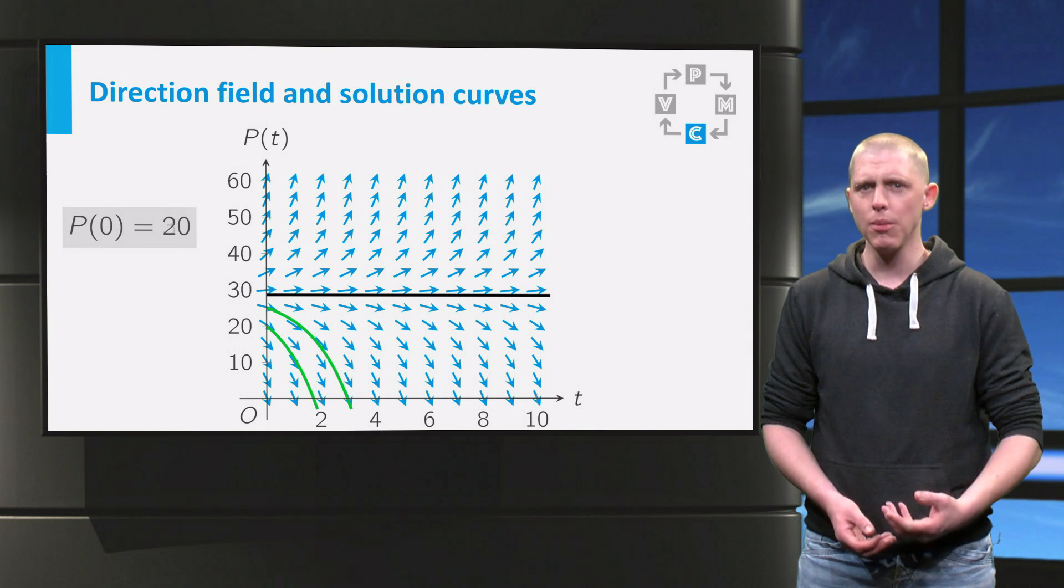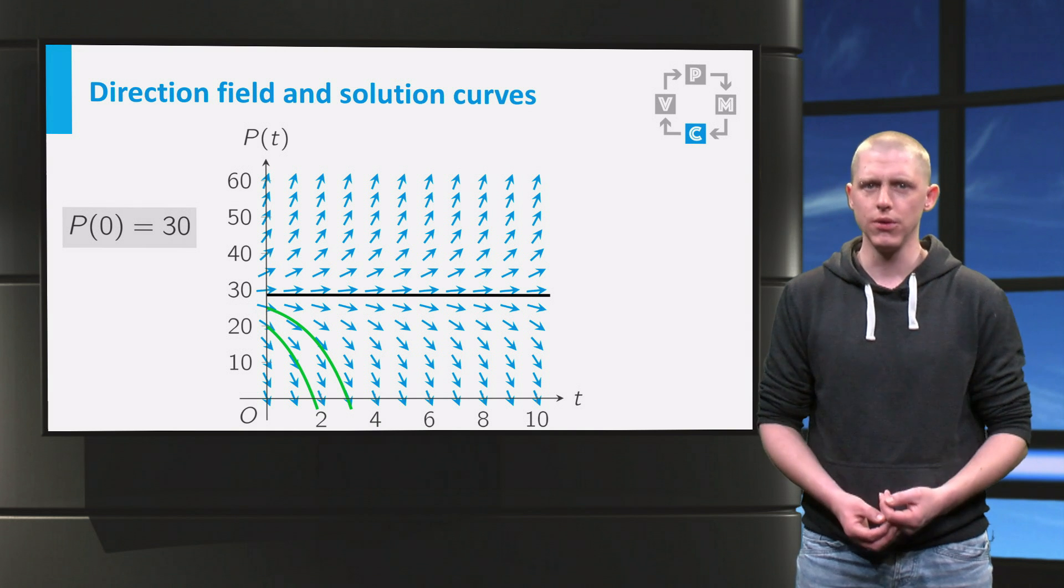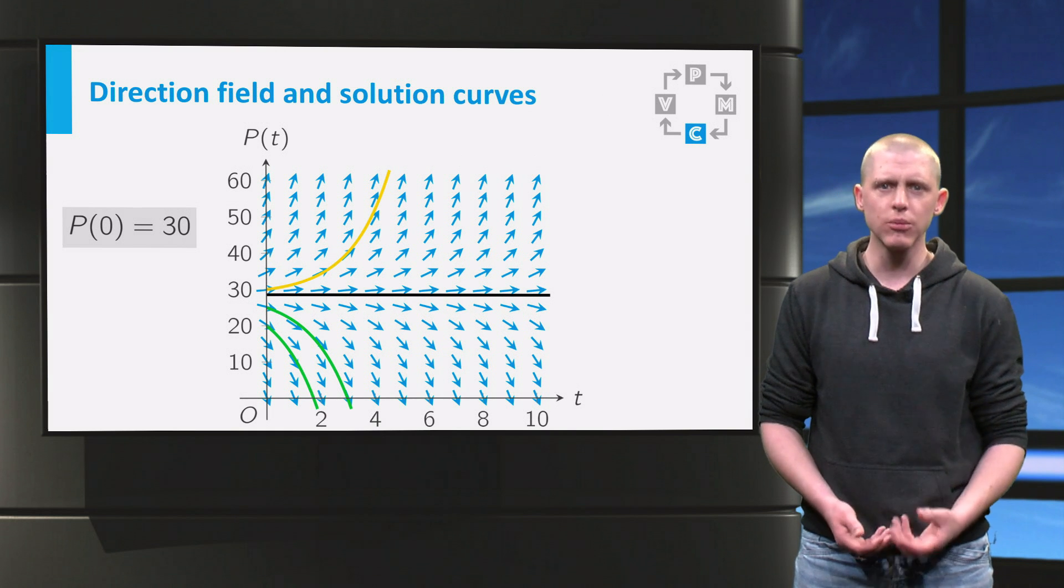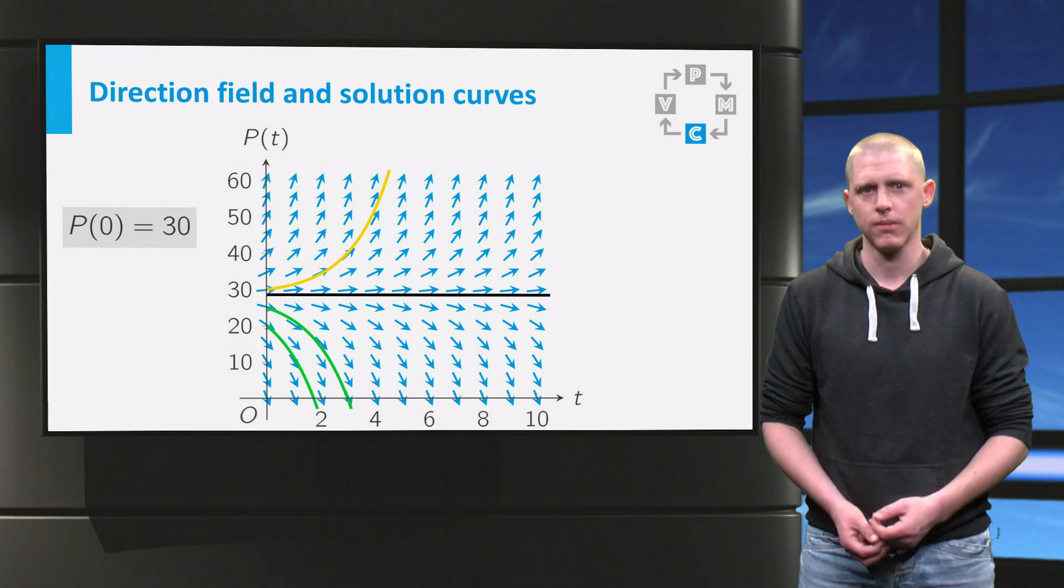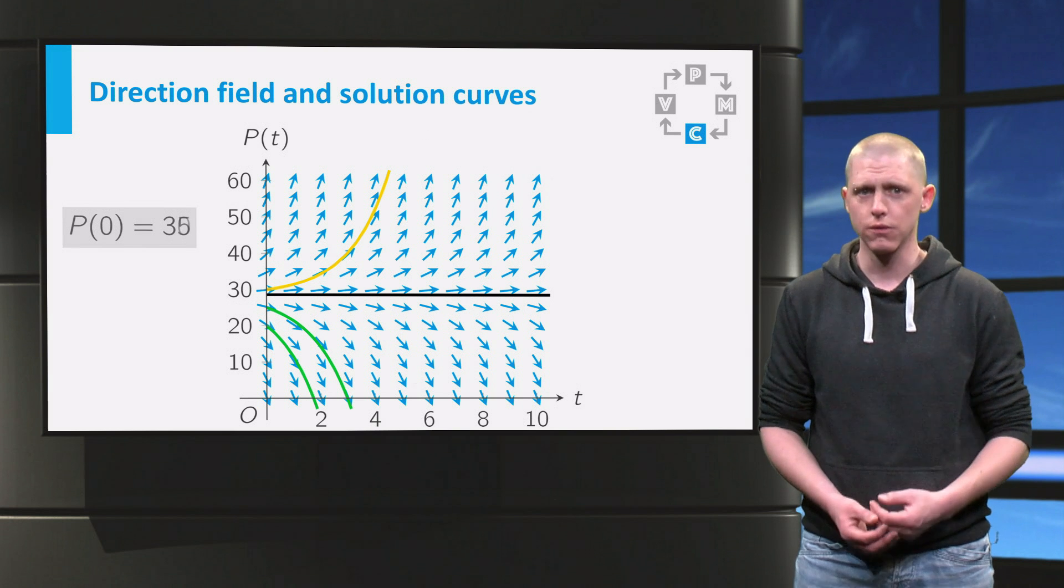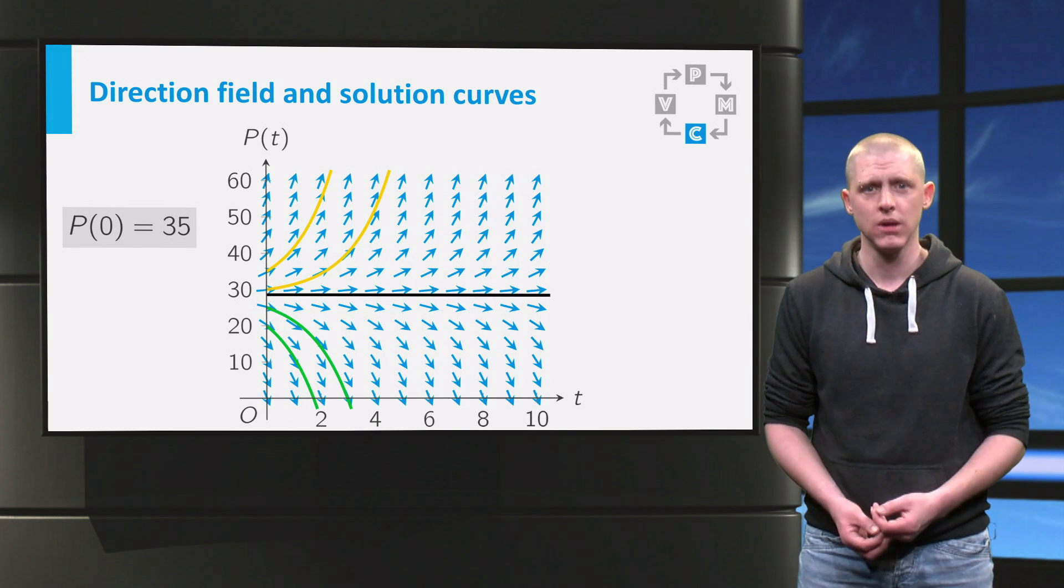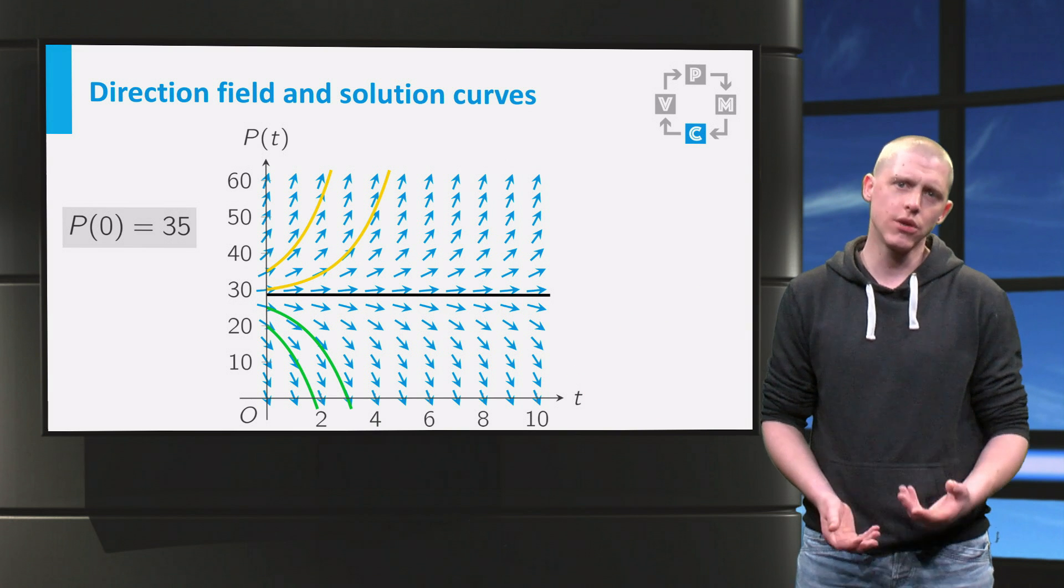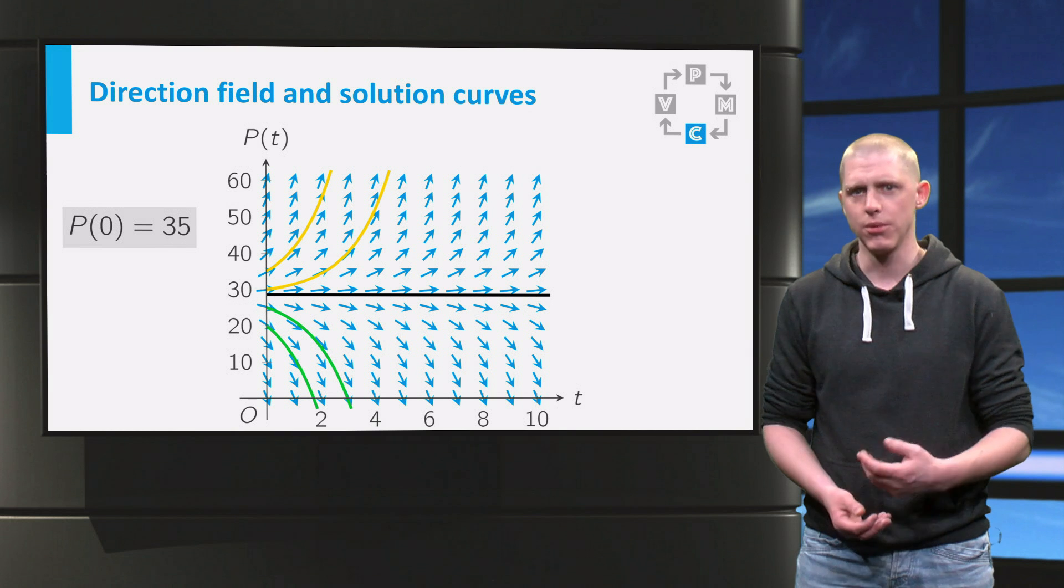Now what would happen if you take a larger initial value, for example 30? As you can see, the yellow curve goes away from the equilibrium as time increases. If I sketch the solution curve for the initial value 35, I get this second yellow curve. Again, this curve goes away from the equilibrium as time increases.